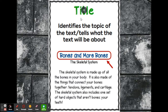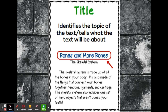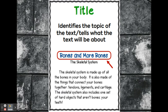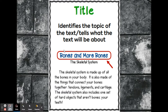The title identifies the topic of the text — it tells what the text will be about. So basically it tells you what the topic, main idea, or the main thing they want you to learn about. So here's an example in red: 'Bones and More Bones.' That would be the title of this selection, this text.